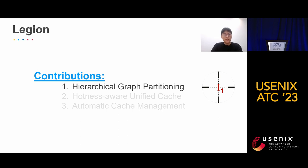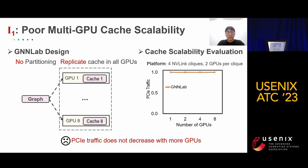Legion proposes three key designs. Firstly, let me introduce the hierarchical graph partitioning, which aims to solve the first issue of poor multi-GPU cache scalability. Let's start with explaining why existing systems have poor multi-GPU cache scalability. In GNNLab's design, the input graph is not partitioned, so the sampled subgraphs are almost identical for all GPUs. Since GNNLab does not support GPU peer access and maintains an independent cache for each GPU, the caches are almost identical for all GPUs.